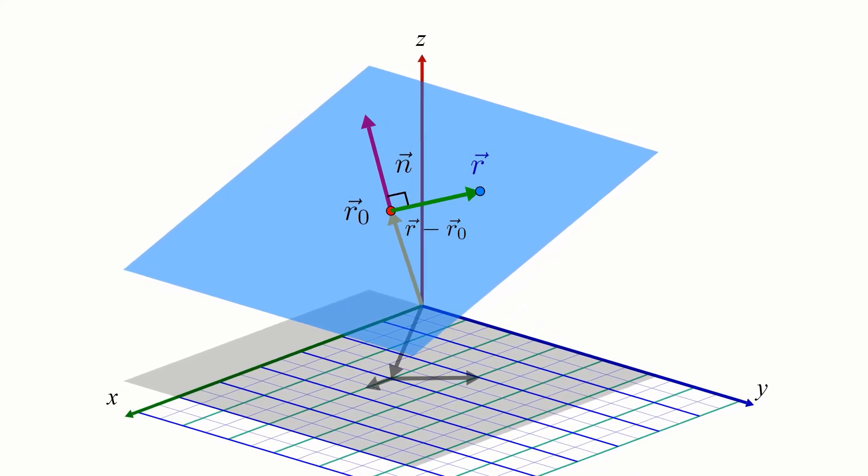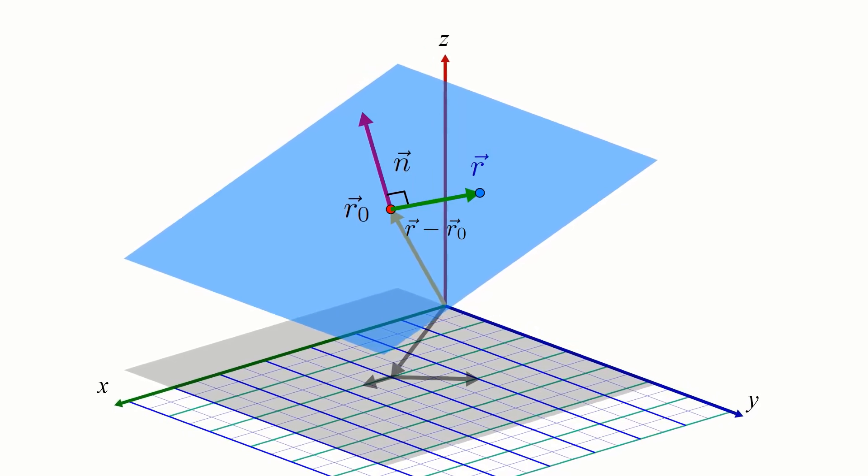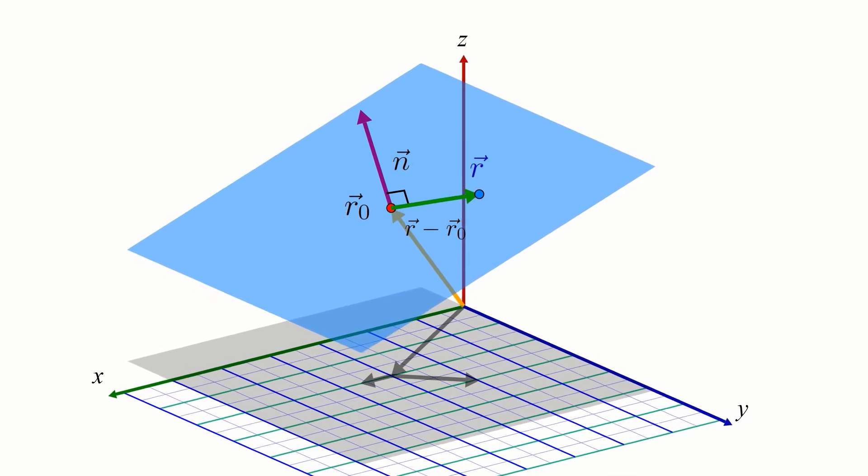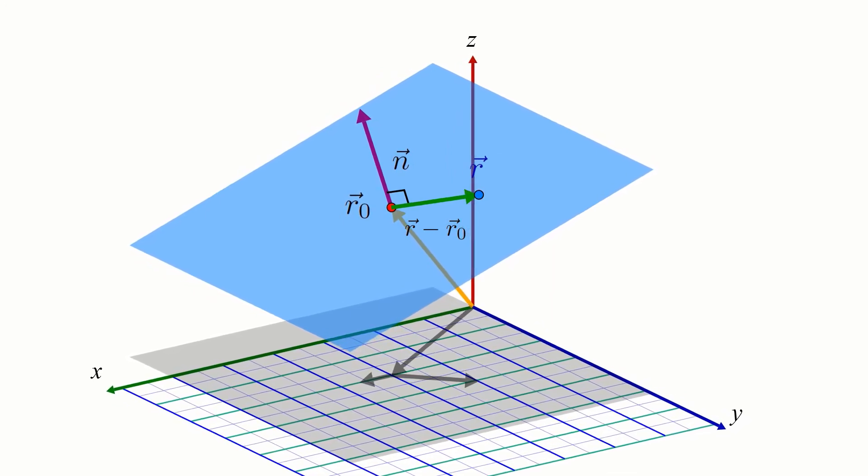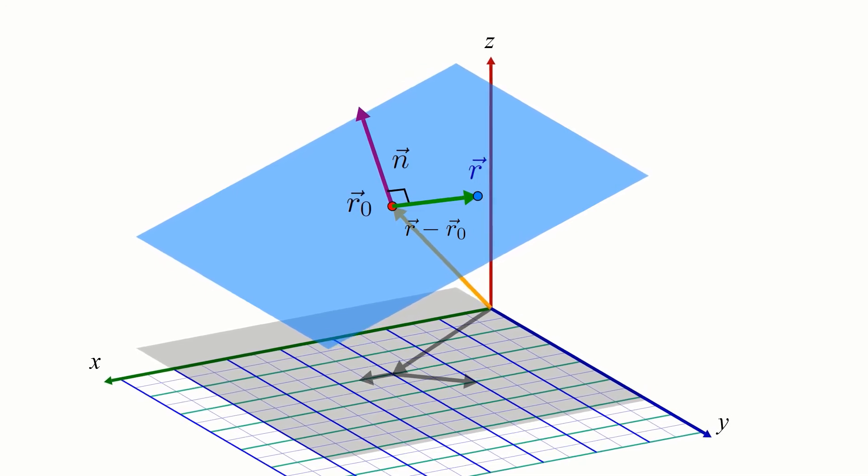Now, since both r and r0 are points on the plane, it means the green vector r minus r0 must lie completely on the plane. And since our normal vector n is perpendicular to the entire plane, it must also be perpendicular to our r minus r0 vector.